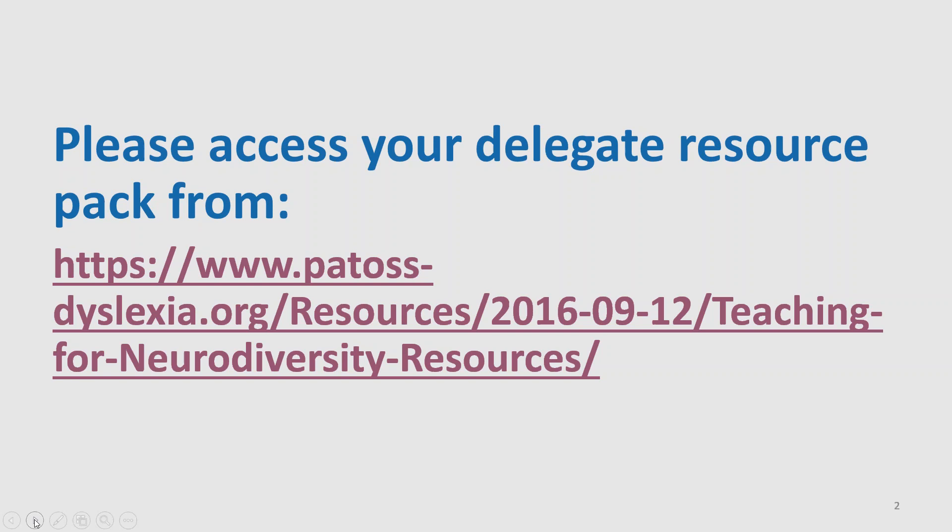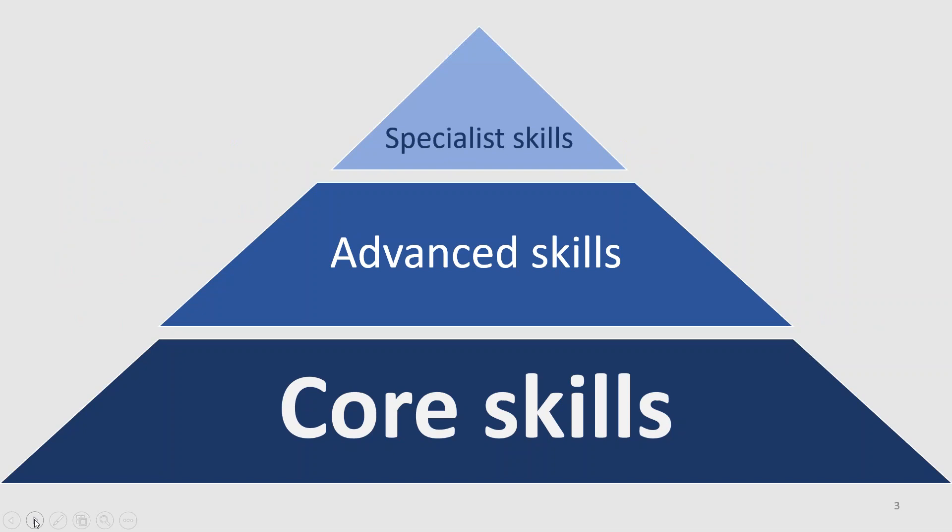I'm really delighted to introduce Jenny Price from PATOSS, who is going to be delivering tonight's webinar. As Liz said, I'm representing PATOSS — the Professional Association of Teachers of Students with Specific Learning Difficulties. As a reminder, this training sits at a core skill level, so it's designed to be delivered to all staff and can be a starting point for raising awareness of neurodiversity in your setting. You can flag it on your SEN report and within your local offer if you're working within a local authority.